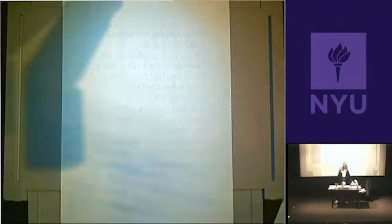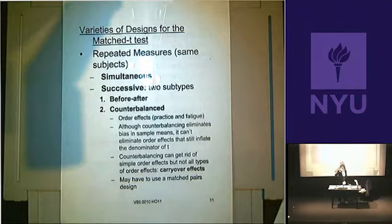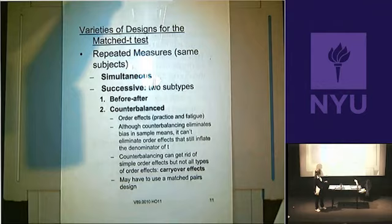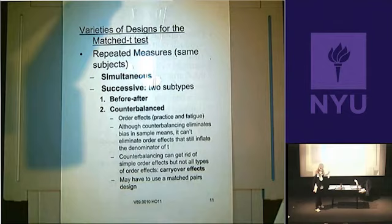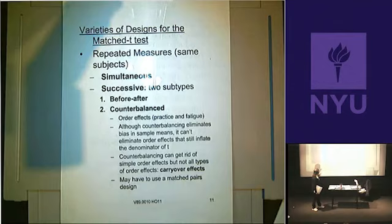Returning to varieties of designs for the matched t-test: you can have repeated measures or matched pairs. Under repeated measures, we have simultaneous and successive designs. A before-after design is a type of successive measurement. The big problem with a before-after design is that there's no control group.